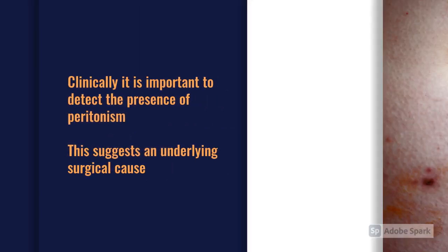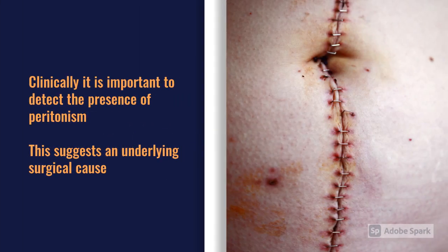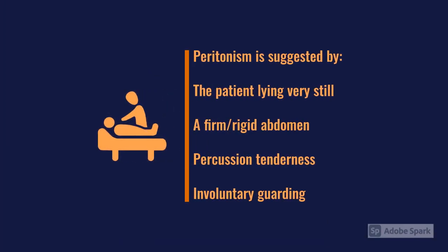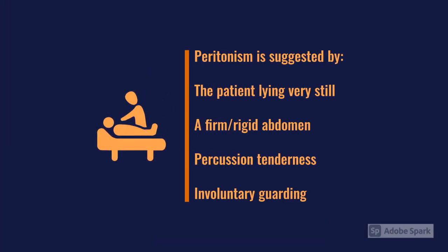When seeing these patients clinically, it's important to detect the presence of peritonism, because this points towards a surgical cause and impacts initial and ongoing management. Peritonism is suggested clinically by a patient lying very still or flat, a firm or rigid abdomen on palpation, percussion tenderness where percussing hurts more than simple palpation, and involuntary guarding where the abdominal muscles move in response to palpation — distinct from voluntary guarding — which suggests actual peritonism.